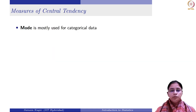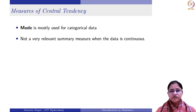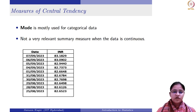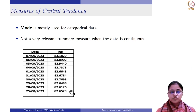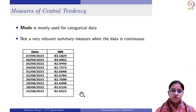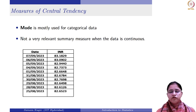Mode, as we have seen, is mainly used for categorical variables. For numerical variables, mode is not a good measure when your data is continuous. For example, with daily conversion rates of dollar to INR, the values are so close to each other that it is difficult to find a mode. So we do not prefer mode for continuous variables or generally for discrete variables either. Mode is mainly used for categorical data sets.